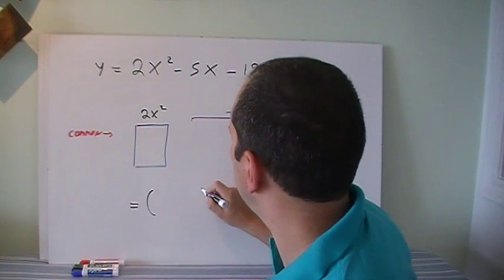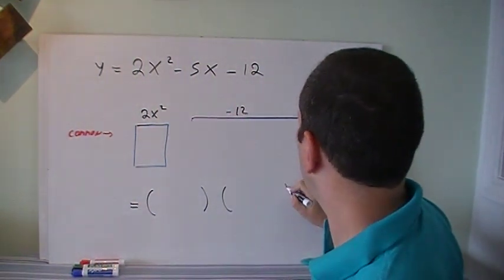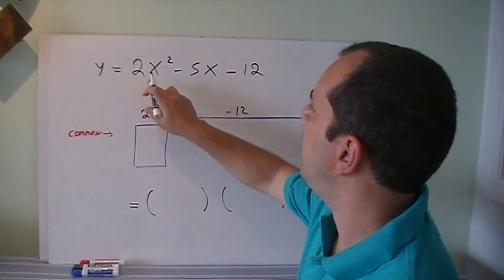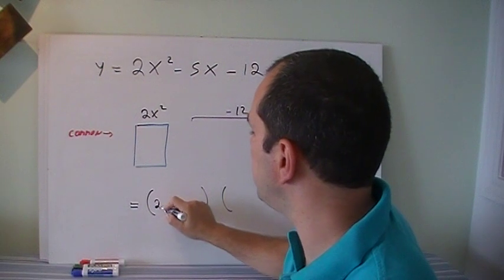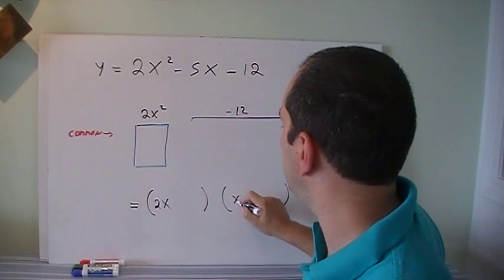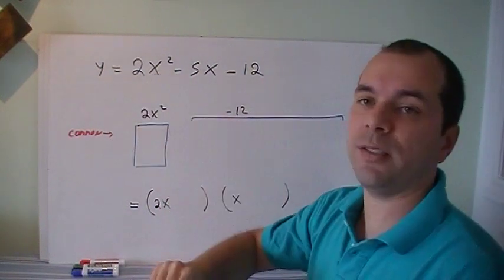So I also know that my answer is going to be in the shape of two brackets, and the first times the first will end up being 2x squared. So it's going to be 2x and x. That will give me the 2x squared.